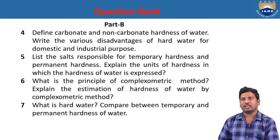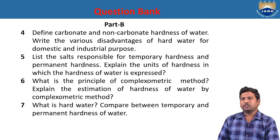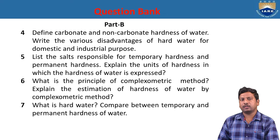Define carbonate and non-carbonate hardness. Carbonate hardness is temporary hardness caused by carbonate salts of calcium and magnesium. Non-carbonate hardness is permanent hardness caused by chlorides and sulphates of calcium and magnesium. Disadvantages of hard water: consumption of soap in bathing and fuel in cooking. In industrial purposes, boiler corrosion takes place.